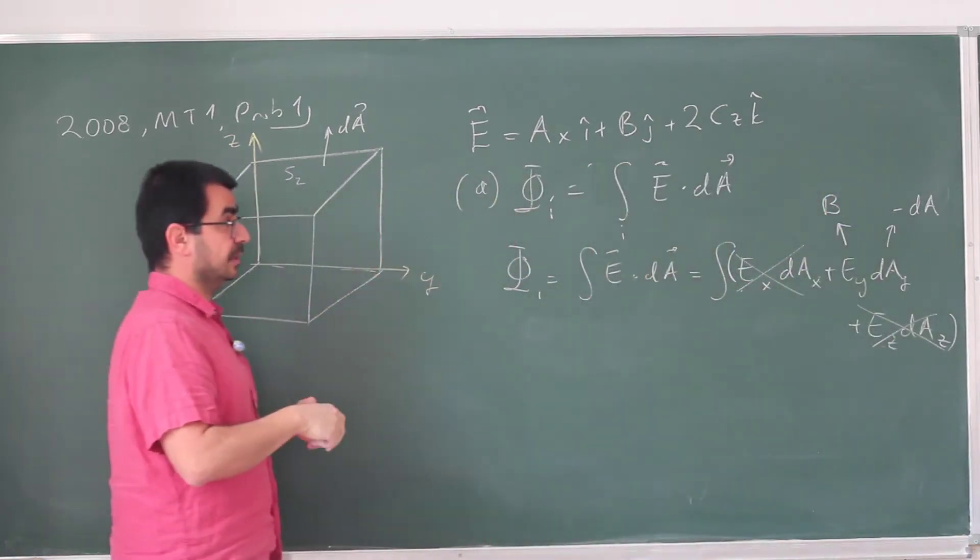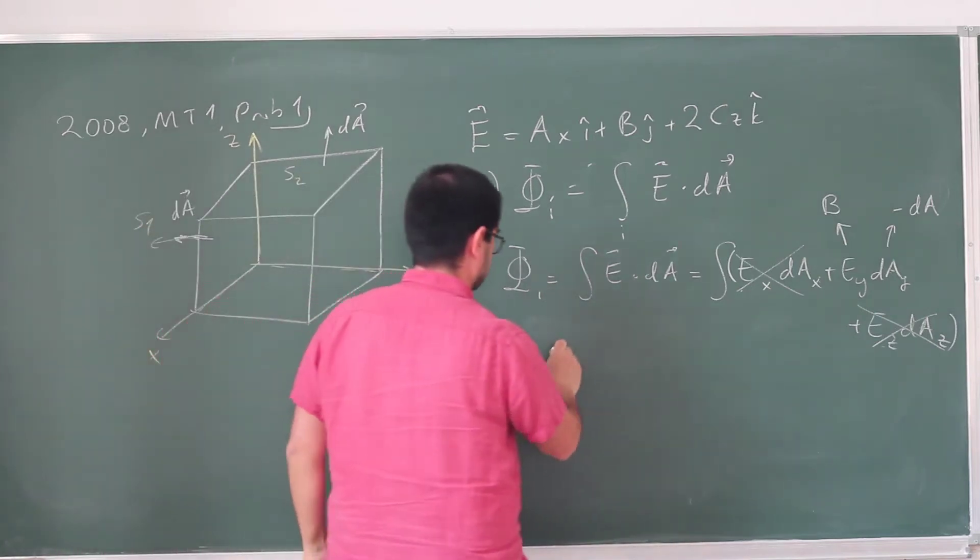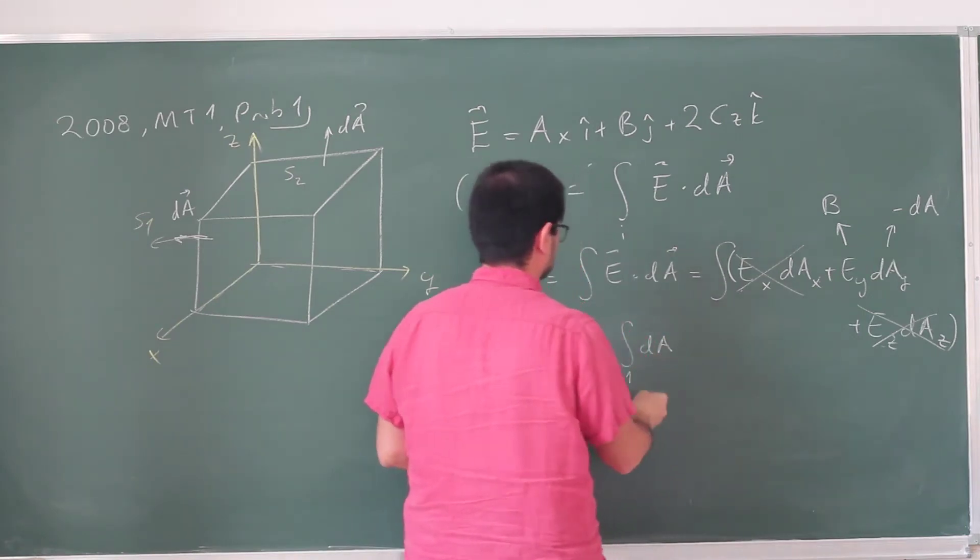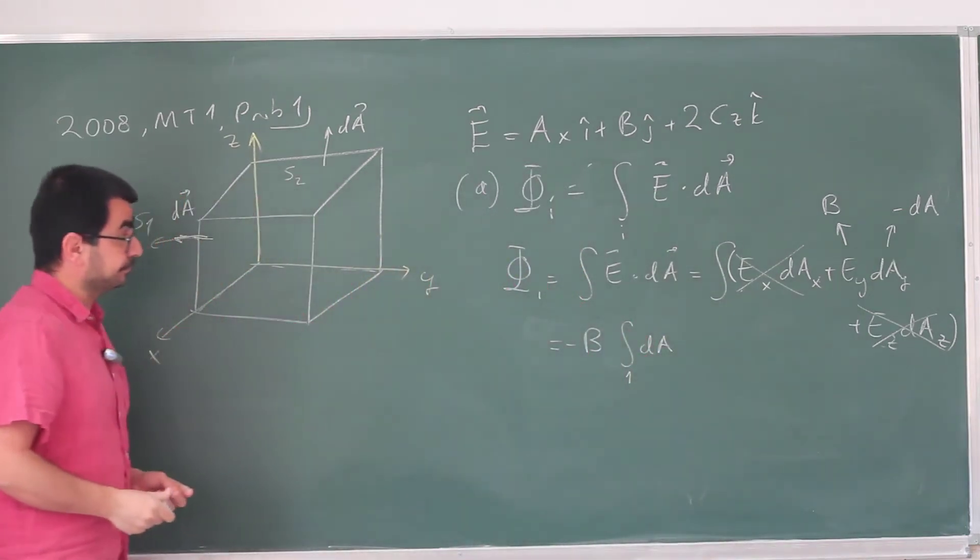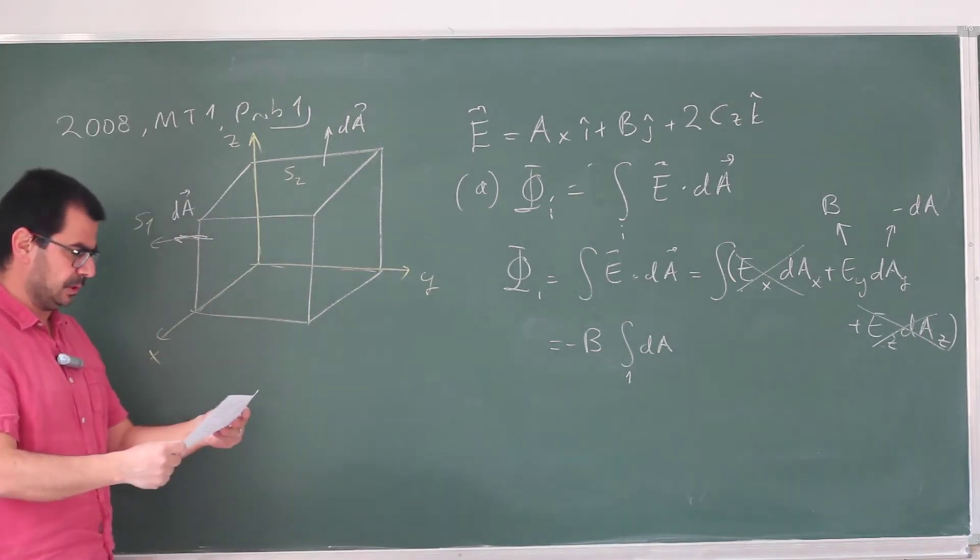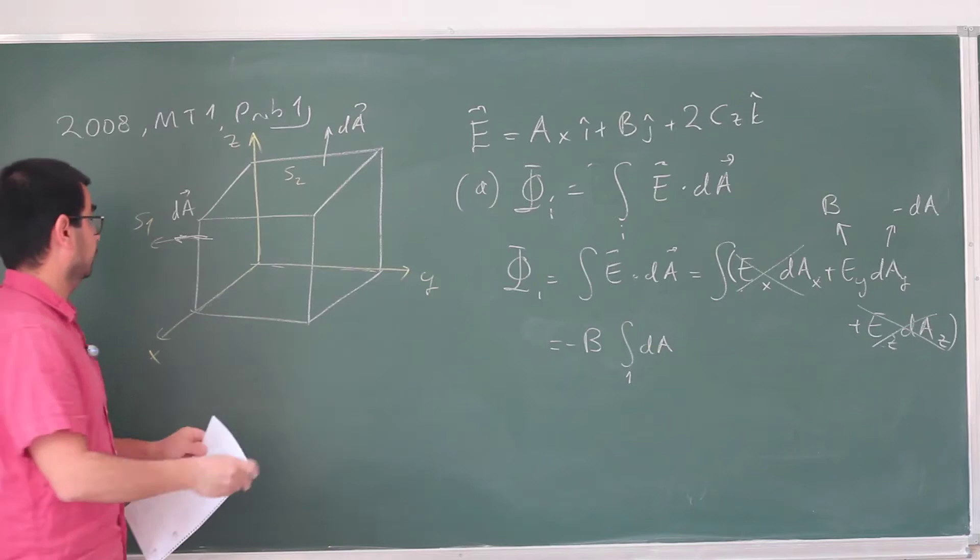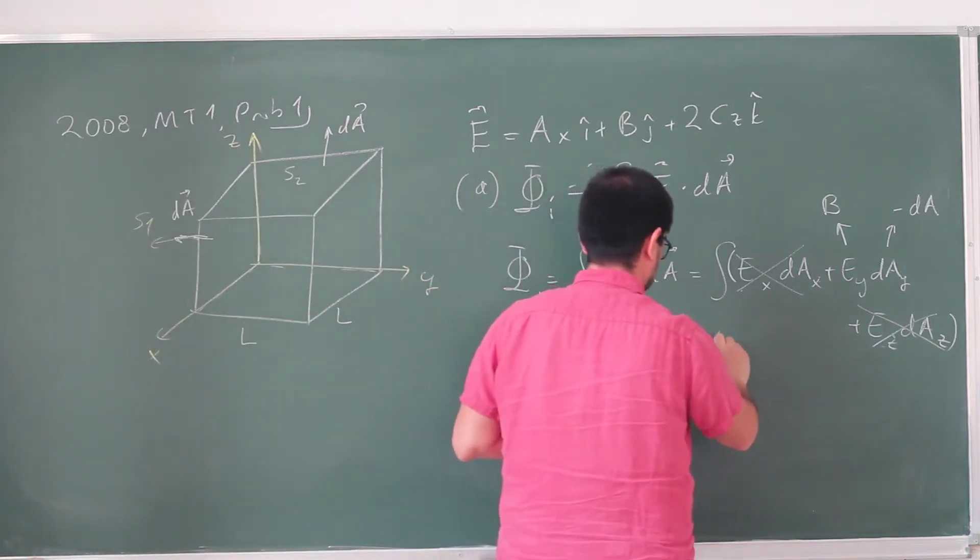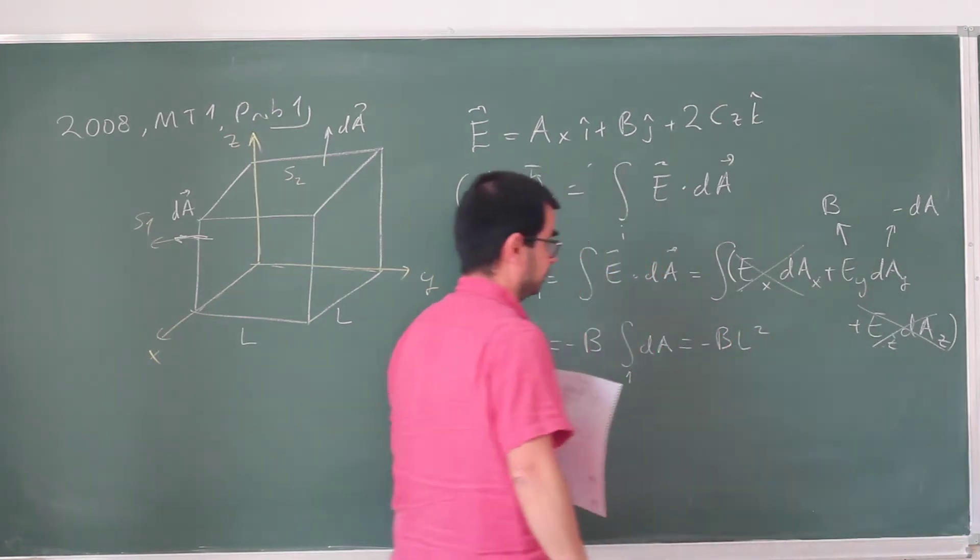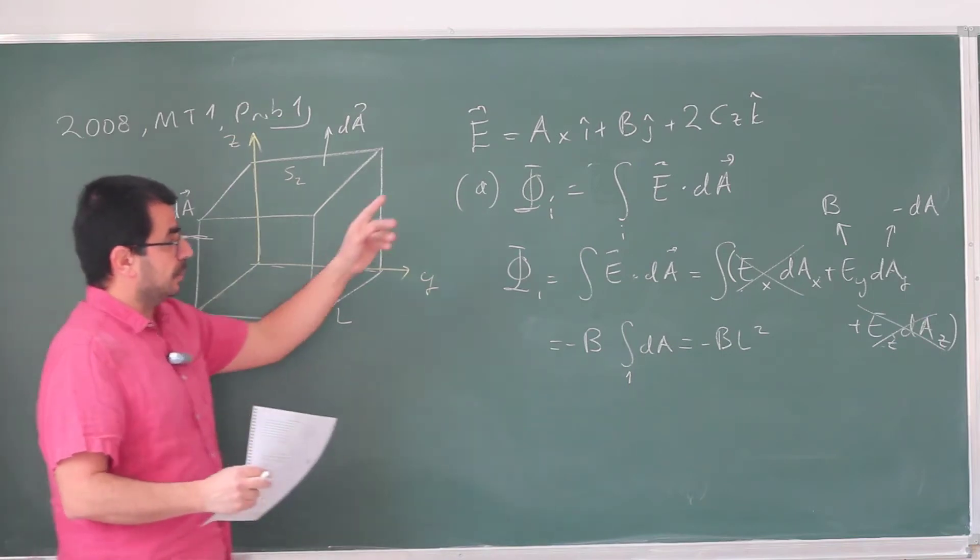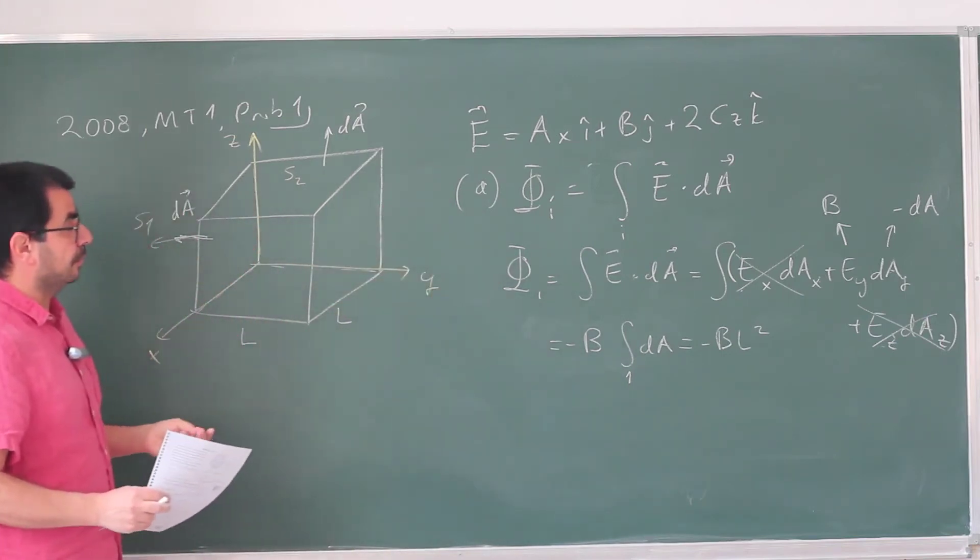So this is going to be -dA times Ex, and Ex is Ax. Because it's not constant, I can't take x out of the integral. But on this face, x equals zero, so this becomes -bL squared.